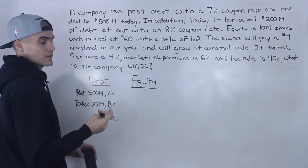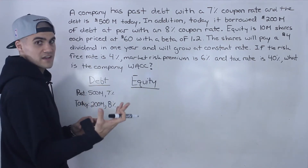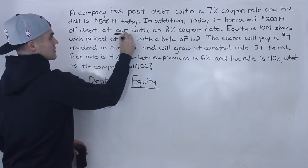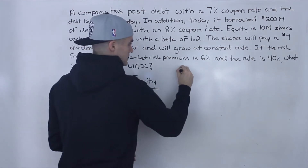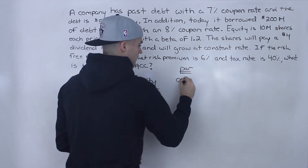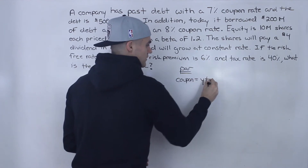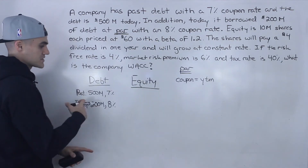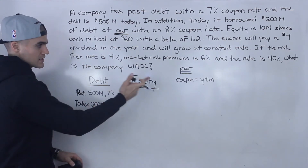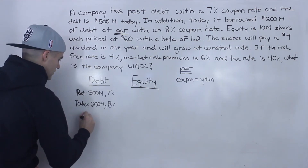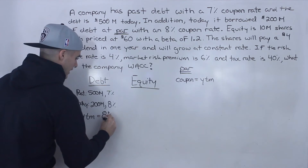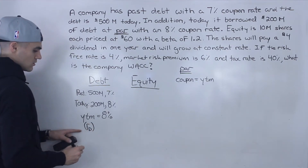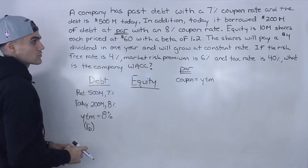Now, what does at par mean? It means that the bonds are worth the face value — $1,000. And if you remember from the bonds chapter, if bonds are issued at par, that means the coupon rate is equal to the yield to maturity. So because the coupon rate is 8% on this new debt and the debt was issued at par, we know that the coupon rate of 8% is also equal to the yield to maturity. So the yield to maturity is 8%.